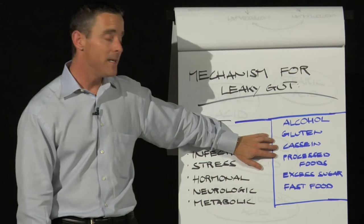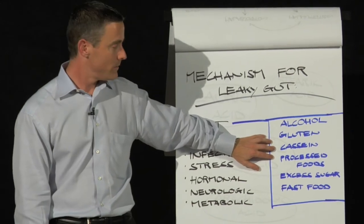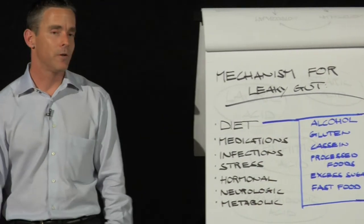gluten which is all the wheat, casein which is all the milk proteins, processed foods, excess sugar, and fast food. Last time I checked, that's American diet, the Western diet right there. Do you guys see where we're at? Does it make maybe sense why we're as sick as we are? It's the food that we eat.